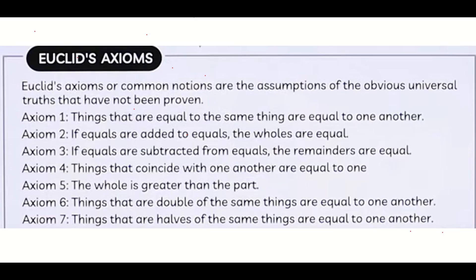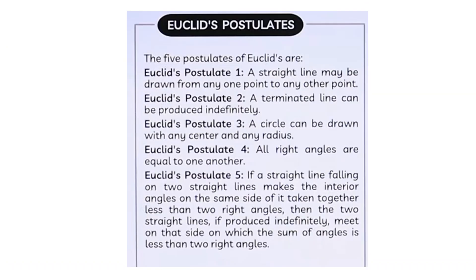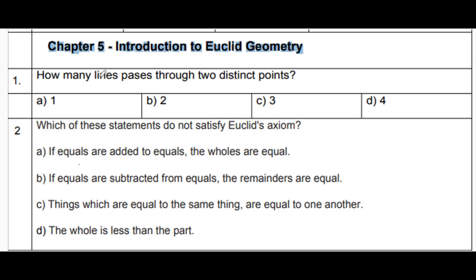Hi, let's see an introduction to Euclid's geometry — what are the different axioms used, and also some revision questions based on these axioms. How many lines pass through two distinct points? Through two distinct points, only one line passes.